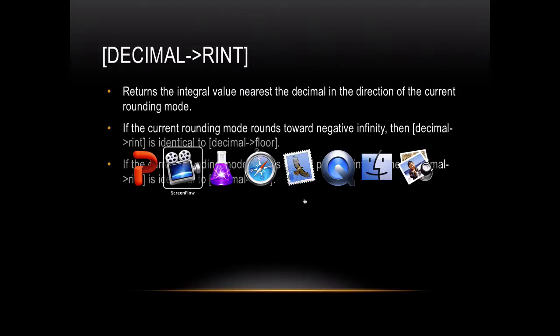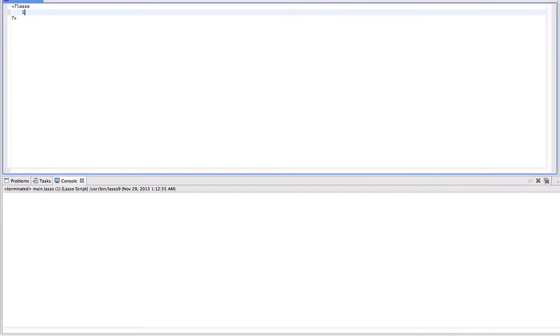I will show you an example. Suppose I have the decimal 1.5 and I use the RINT function on it. When I run this code, I will get the value 2.0, which means currently the rounding function rounds towards positive infinity. Thank you.